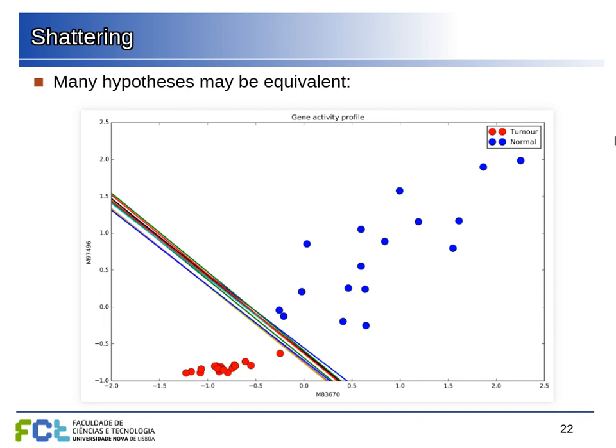Even though the hypothesis class is infinite — for classifying a dataset with logistic regression we can set the discriminant anywhere in a continuous range — many of these discriminants give us the same result, still separating the set the same way. So it's not so much the number of discriminants we can make, which are infinite, but how well they can separate the classes that matters. This leads us to the notion of shattering.